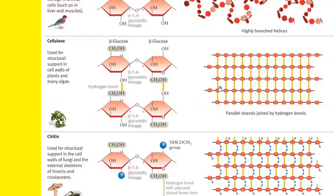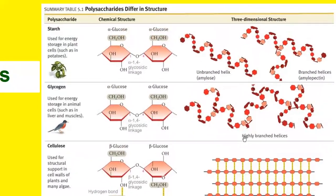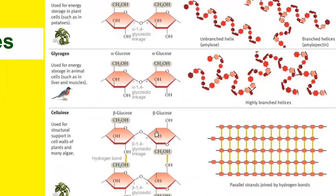That's why cellulose is so difficult to digest and most animals cannot digest it. In starch, the glucose is hooked together with a 1-4 glycosidic linkage, and in cellulose the linkage is different — and that difference in linkage also contributes to the difficulty in digestion.